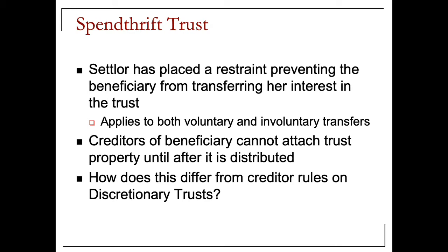These provisions are useful because instead of distributing to a beneficiary, a trustee can support the beneficiary by paying for the beneficiary's expenses directly to the provider of health care, the landlord, or the university. They can't make distributions to the beneficiary directly, but spendthrift provisions allow them to make payments for the benefit of the beneficiary to a third party.